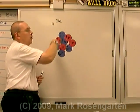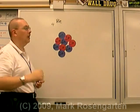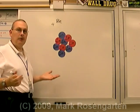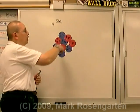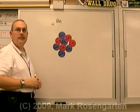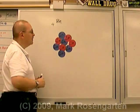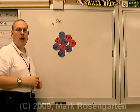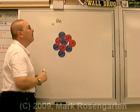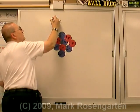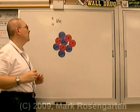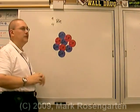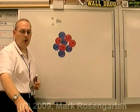The number of protons identifies the element. What's the mass number of this isotope? Well, there are four protons plus five neutrons for a combined total atomic mass of nine. That's the mass number of this particular isotope.